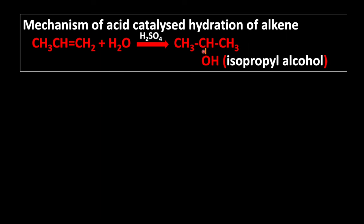Let us take propene as an example and see the mechanism. Step 1: Generation of H3O+. H2O reacts with H+ of H2SO4 and produces H3O+ hydronium ion.